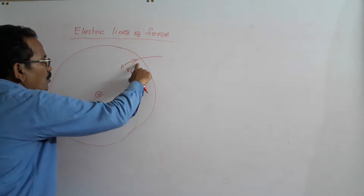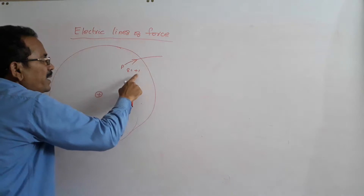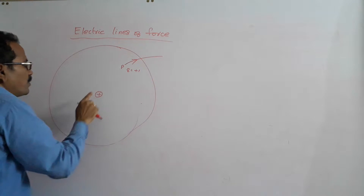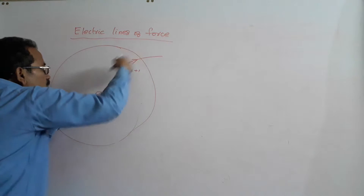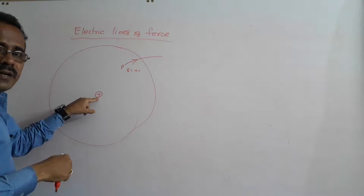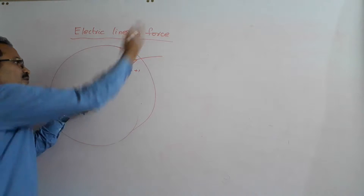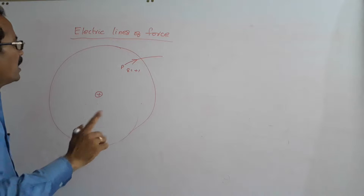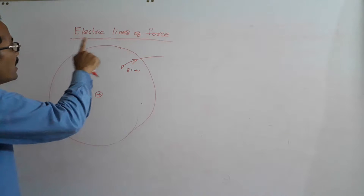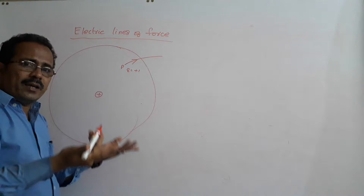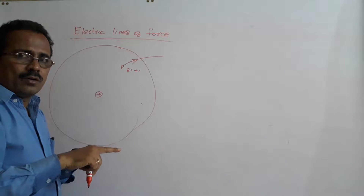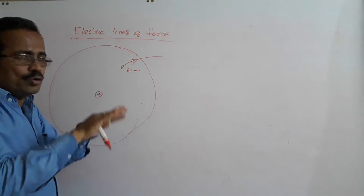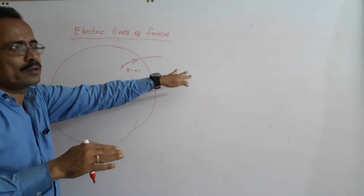Electric Lines of Force is the path traced by a unit positive charge. It is directed away from a positive charge and towards a negative charge. So it is away from a positive charge and towards a negative charge. Electric Lines of Force is a line or curve which a unit positive charge, free to move, would trace.